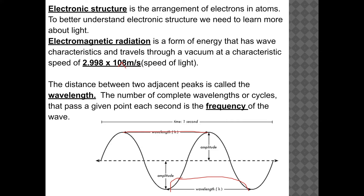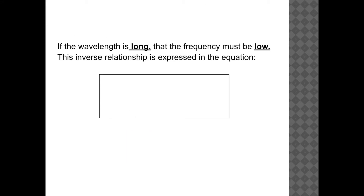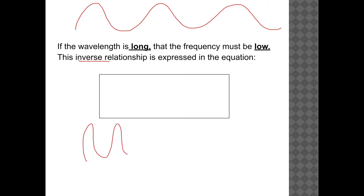Don't get confused — frequency is not about speed, because we know that all light travels at the same speed. It's more about how squashed the wave is together. Notice that if you draw a wave with a long wavelength, it has a low frequency. On the opposite side, if you draw a wave with a short wavelength, it has a high frequency.